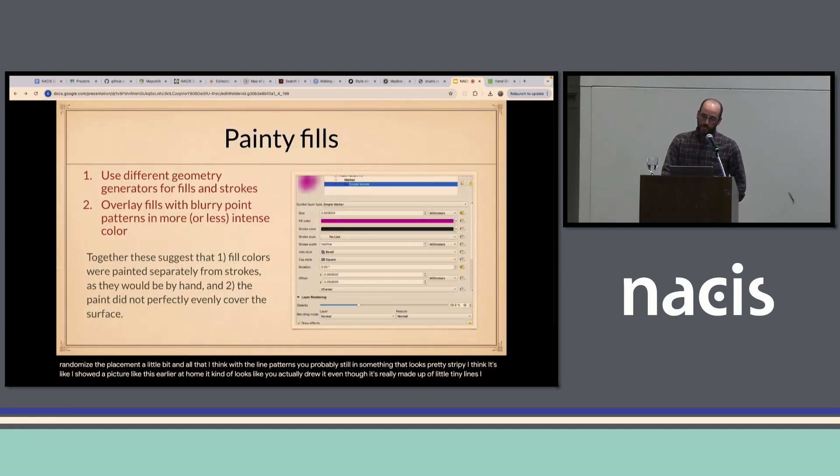You can use those little stroke symbols and each one can be a little bit rotated. You can randomize the placement a little bit and all that. I think with the line patterns you would probably still end up with something that looks pretty stripey I think. I showed a picture like this earlier. It kind of looks like you actually drew it even though it's really made up of little tiny lines. If you want a fill that's more like paint or maybe a watercolor, I use usually a solid fill and then on top of that another point pattern. This time the point pattern uses some weird shape like there's hearts and stars are kind of some of the default options and you make those big, again randomizing size, rotation and so on and then also blur them and make them in either a little bit more intense or less intense color than the base fill and that will give you some unevenness to the intensity of the fill over the shape.